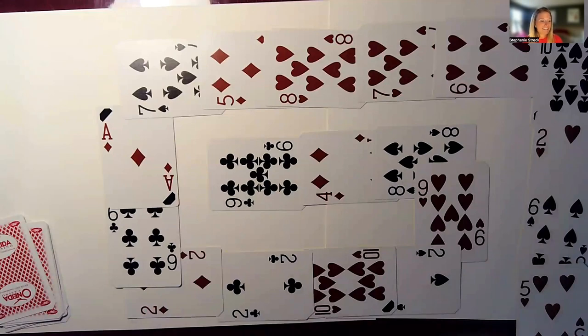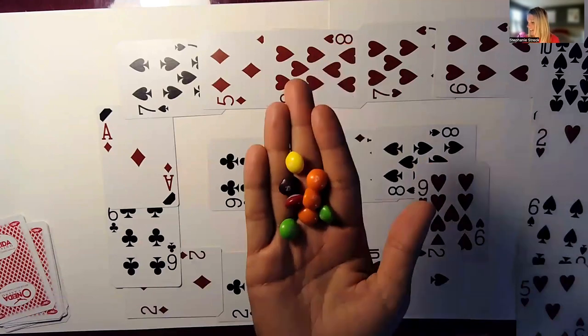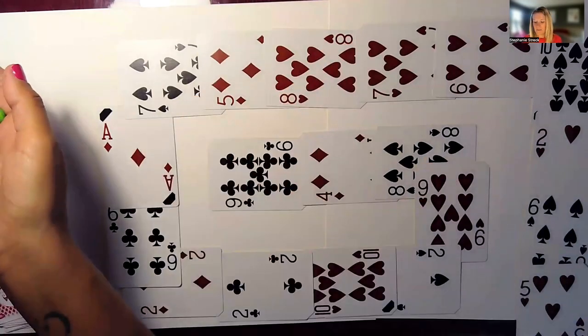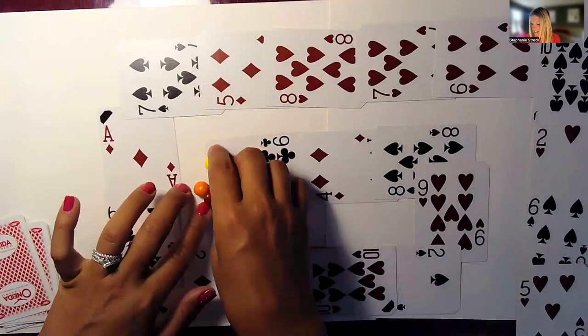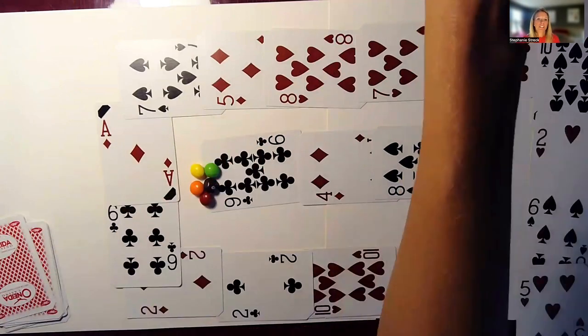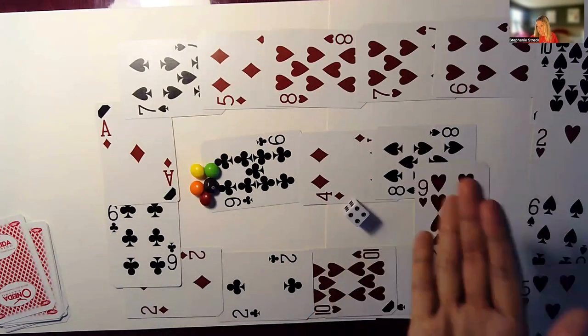We need some game pieces, and so I found a snack-sized bag of Skittles and emptied that out, and we have enough for five players if we wanted to. You'll all start right here on the start, and then you will just need a dice. If you don't have your own dice, you can download a dice app on one of your devices and roll that.